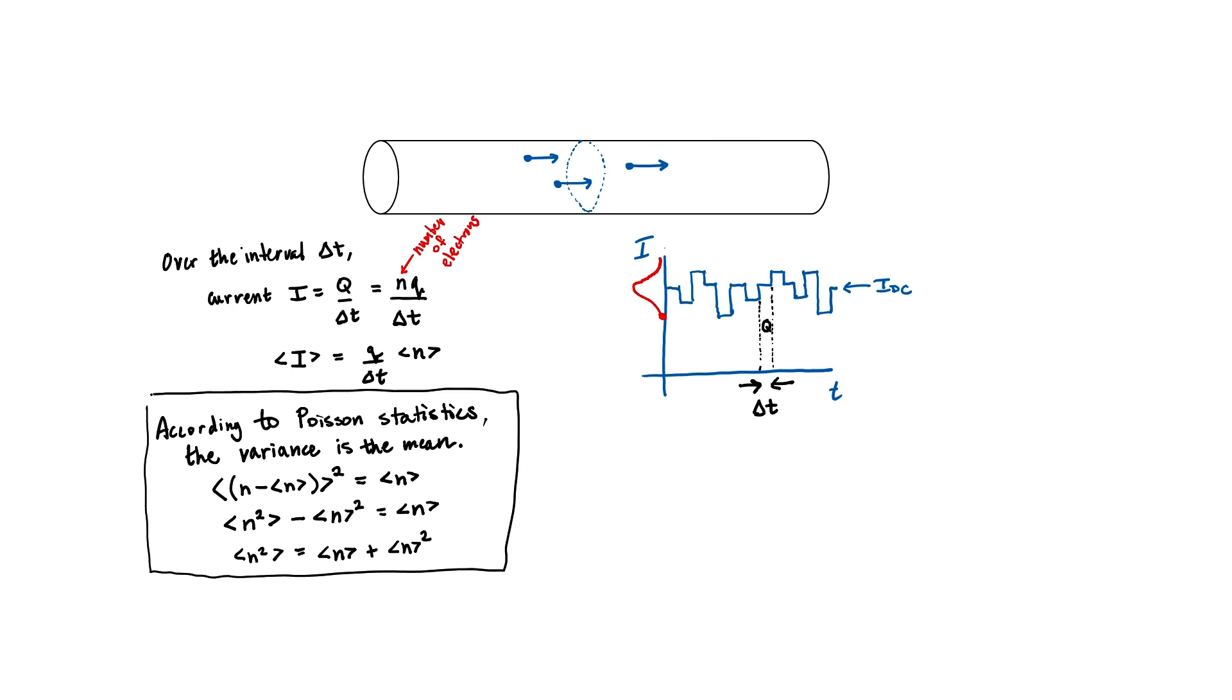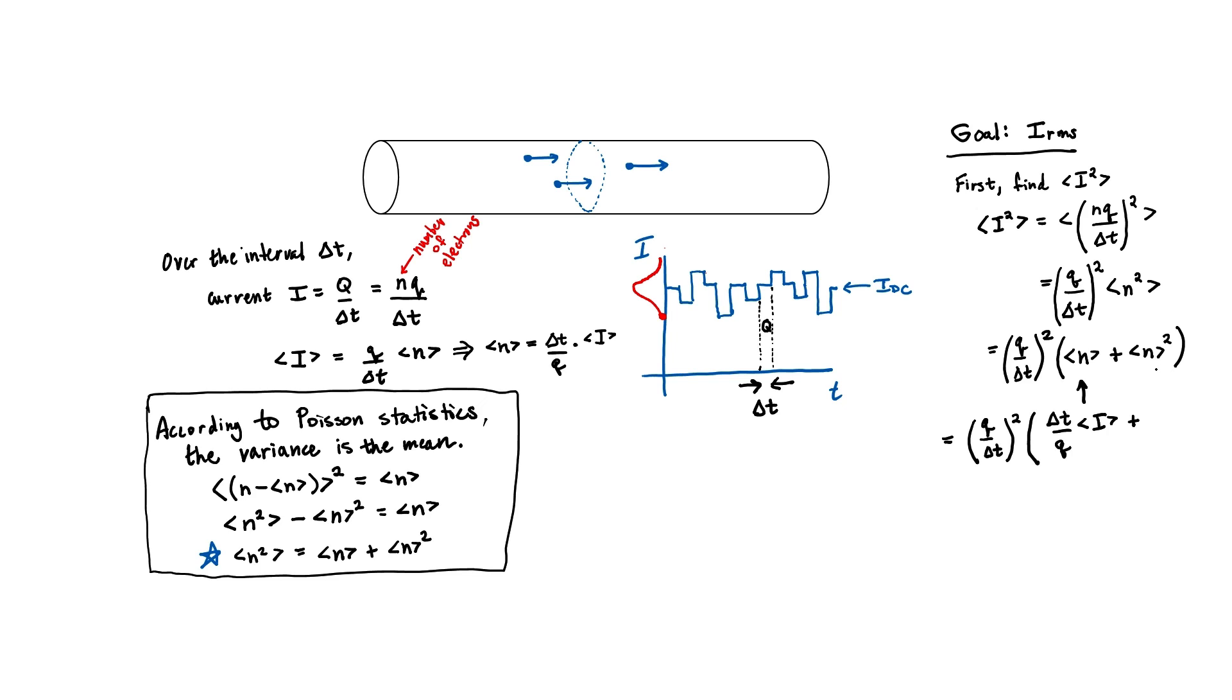Recall that our goal is to find the root mean squared of the current. Let's find the mean square of the current first. We can take the root later. I know what I is because I've defined it over here. I can now pull out the constants Q and delta T. I can now substitute for the mean of N squared from over here. I now want to take this equation and move the average N to the left side. We can substitute that in for our N. We can substitute it for our second term as well.